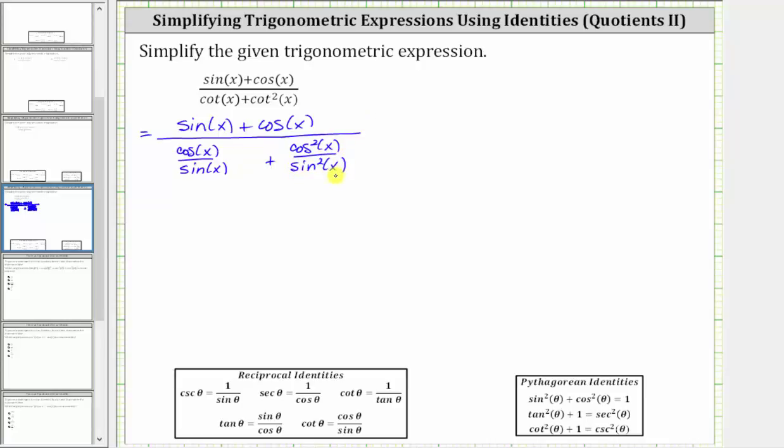And now let's determine the sum. Notice how the least common denominator is going to be sine squared x, and therefore we need to multiply the numerator and denominator of cosine x over sine x by sine x. This will give us the common denominator of sine squared x.